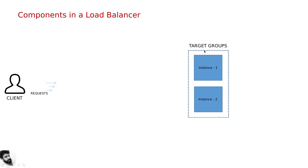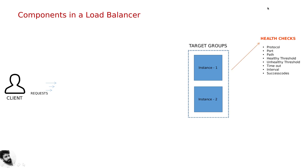This is what we will do. The target group will include two instances. The request will come to the client, and ultimately the target group will route the request to the server. The instance will go through health checks, and the target group will be configured accordingly.